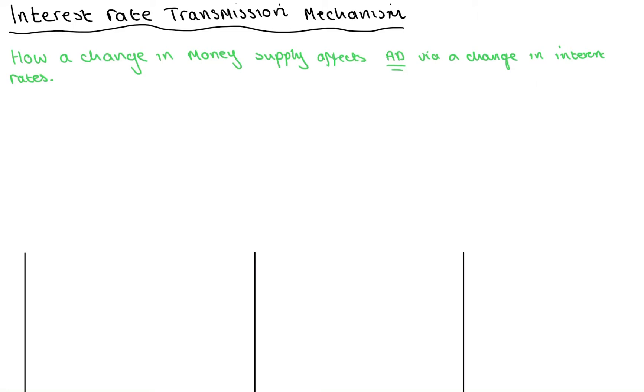So without further ado let's get into this. The interest rate transmission mechanism is how a change in the money supply affects aggregate demand via a change in interest rates.